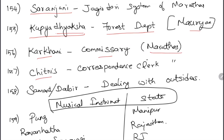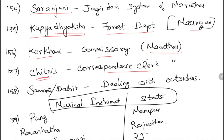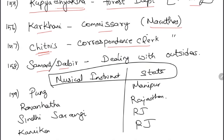Karkani were commissionaries during the Marathas. Chitnis were correspondence clerks during the Marathas — similar to Putnis (cash keepers); both are clerical roles like in a bank. Samant or Dabir were officers dealing with outsiders. Musical instruments by state: Pung is in Manipur; Ravan Hatha is in Rajasthan; Sindhi Sarangi in Rajasthan; Kanika in Rajasthan.